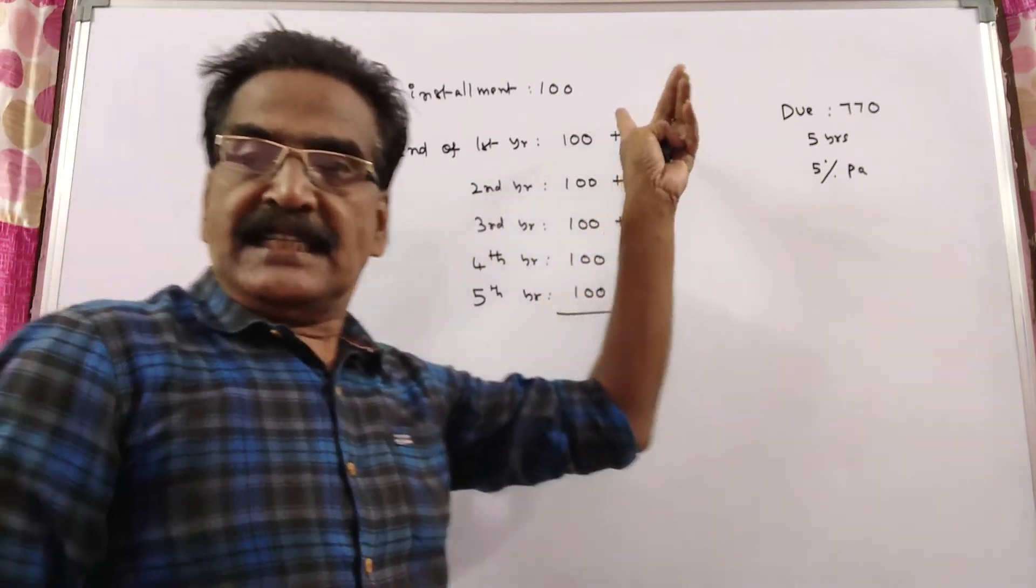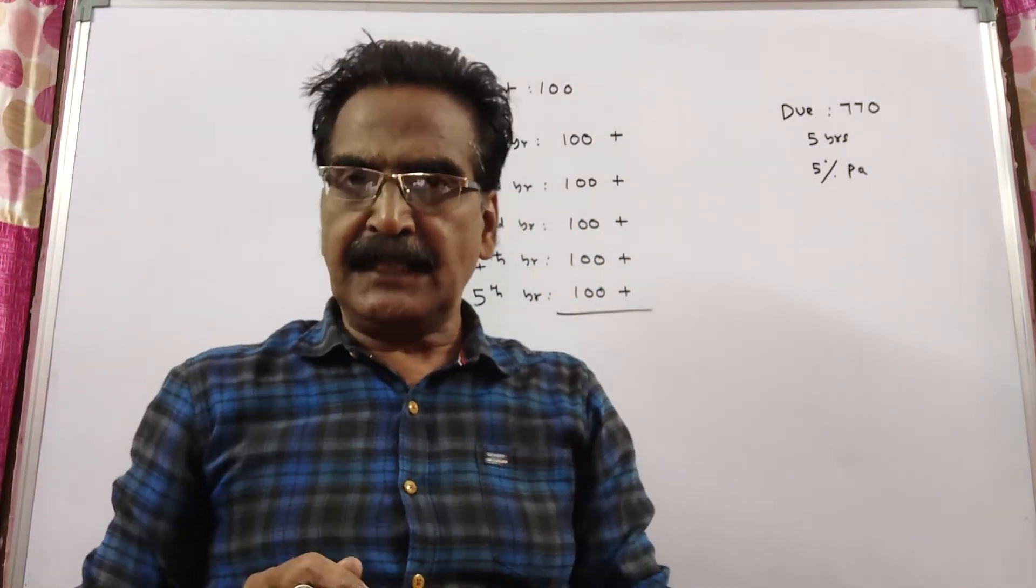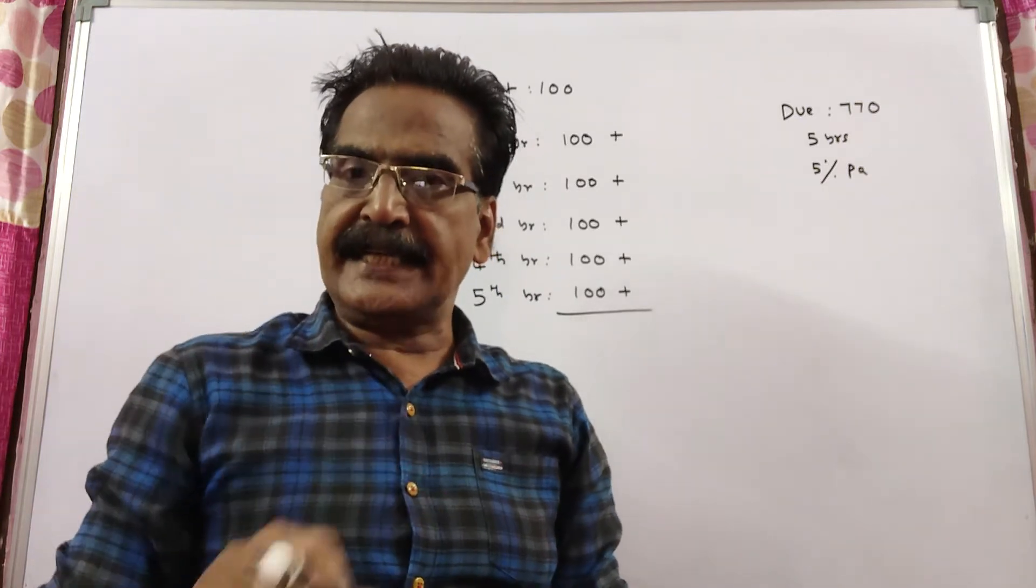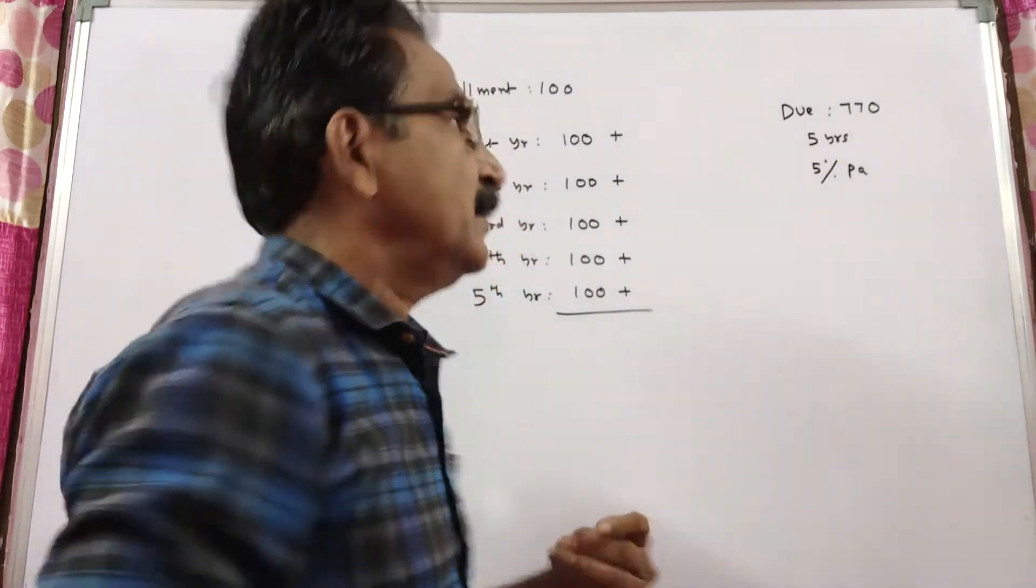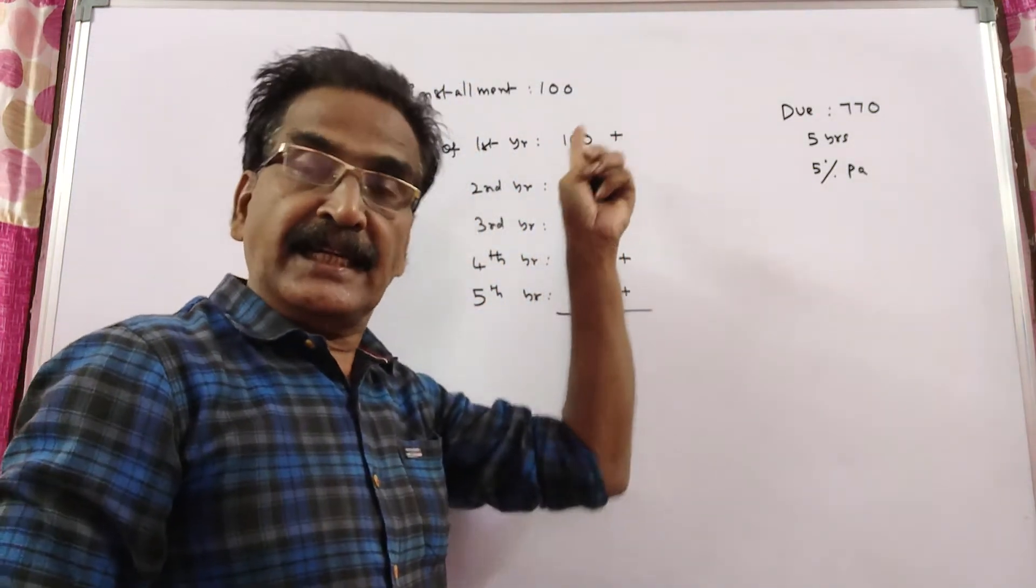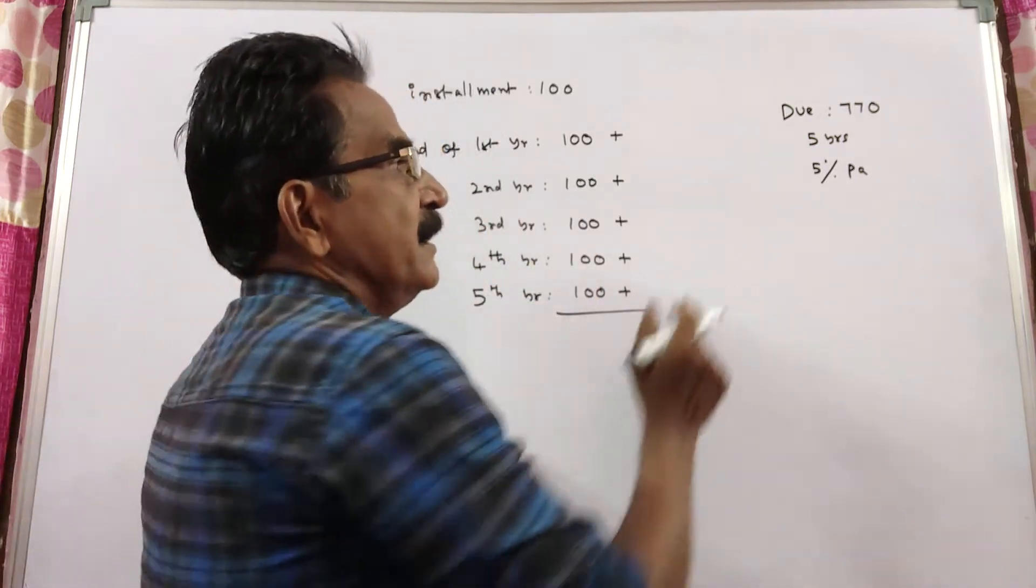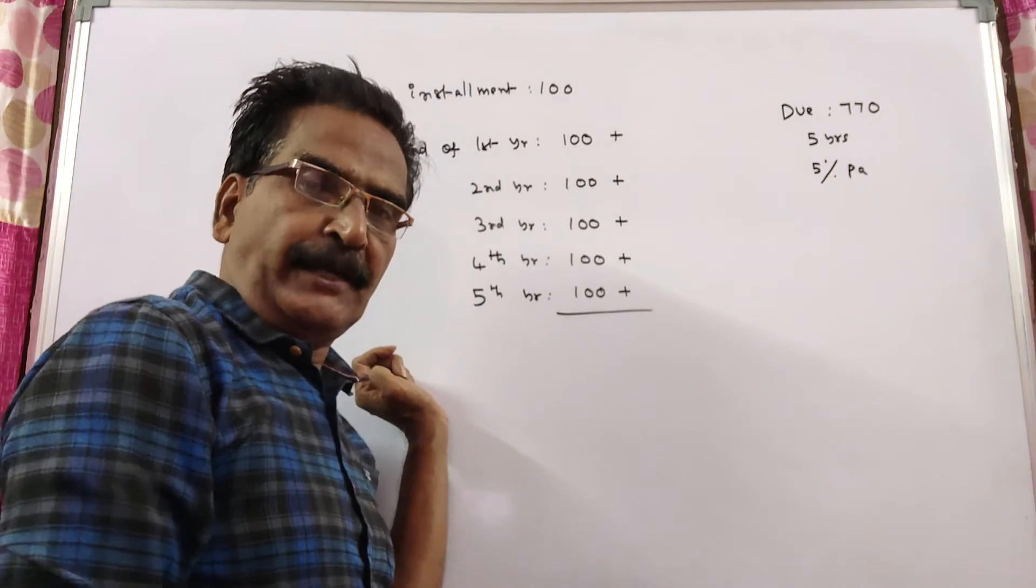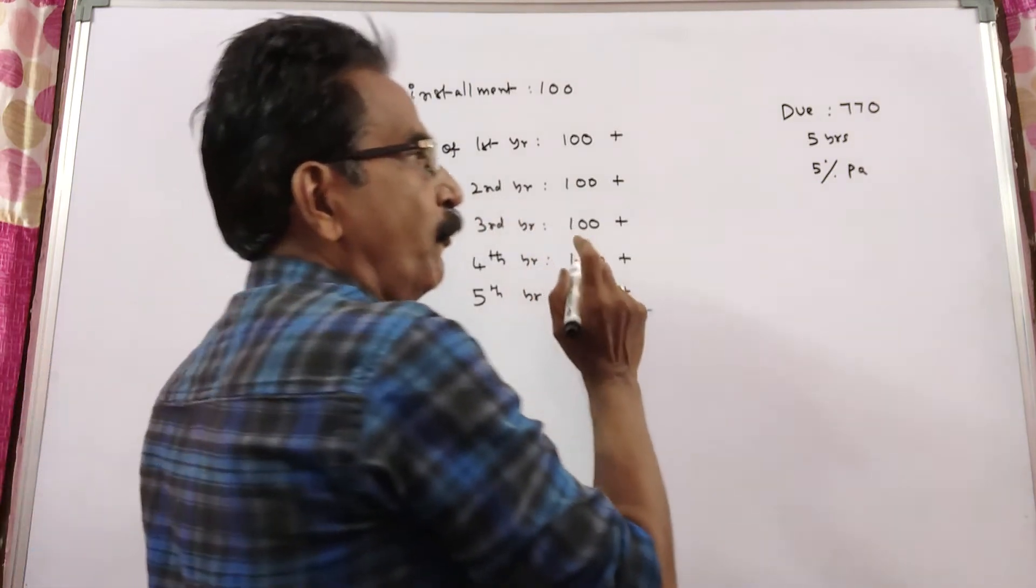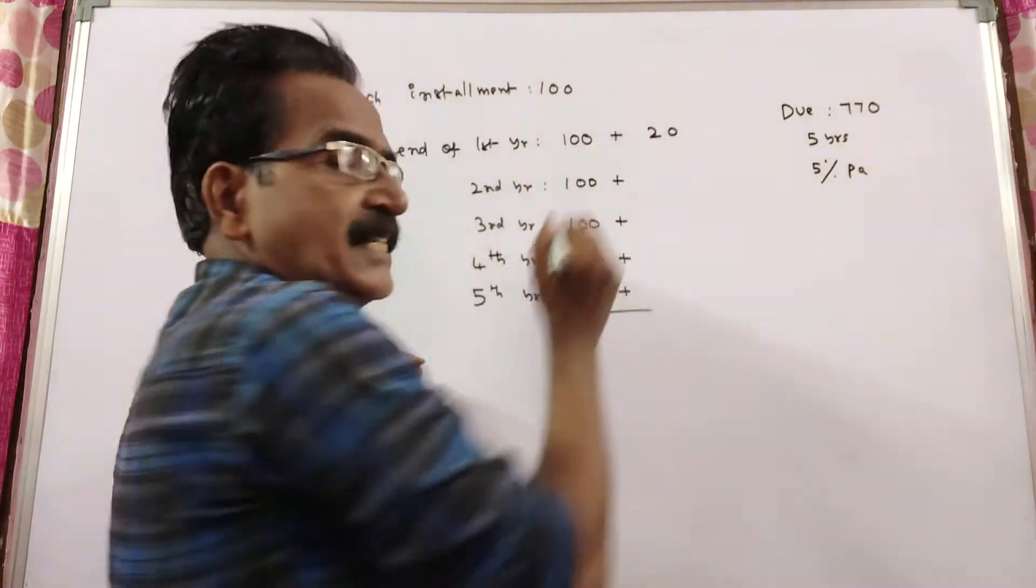The first installment you pay at the end of the first year will fetch interest for 4 years - for second year, third year, fourth year, and fifth year. The interest rate is 5 rupees per annum. So for 4 years, the interest on 100 is Rs. 20.